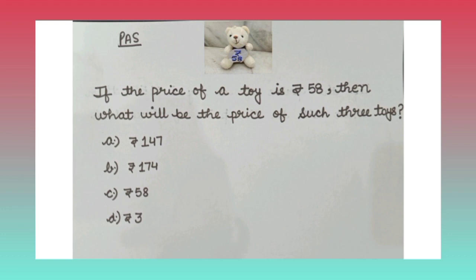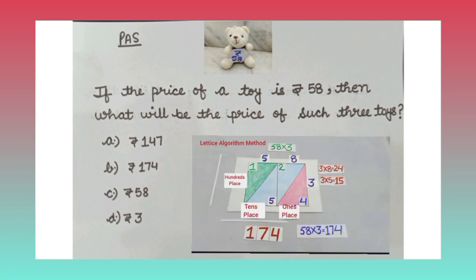You can solve this sum by various methods. But today, we have learnt through lattice algorithm method, that 58 into 3 is equal to 174. So, the right answer for our question is option B, that is rupees 174.